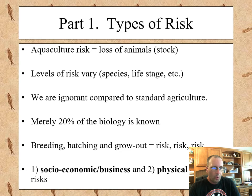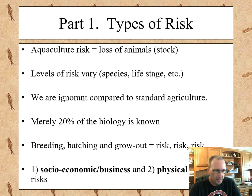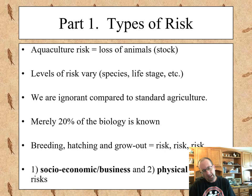So what types of risk are we talking about? One of the major risks is a loss of the animals we're caring for. The levels of risk vary depending on the species or the life stage — the smaller the fish, generally the more challenges you have with providing food and quality water. Aquaculture is also way behind other traditional agriculture models like swine or poultry, which are literally decades ahead of us in risk management.